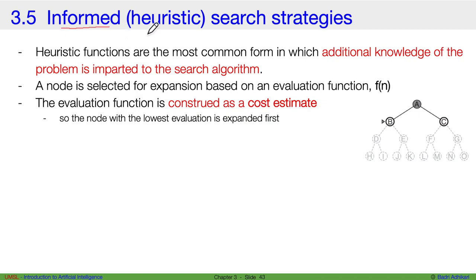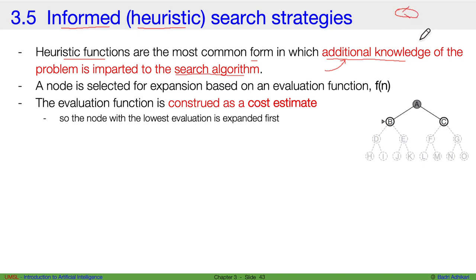Next we will discuss informed or heuristic-based search algorithms. Heuristic functions are a common form in which we can impart additional knowledge to the search algorithm. If you remember, uninformed search strategies were like when somebody is flying an airplane and the engine is lost — you had to look almost everywhere. That is what DFS, BFS, and UCS do. With informed search strategies, we want to inform the algorithm to do lesser search so that it can be faster and more effective, using heuristic functions.